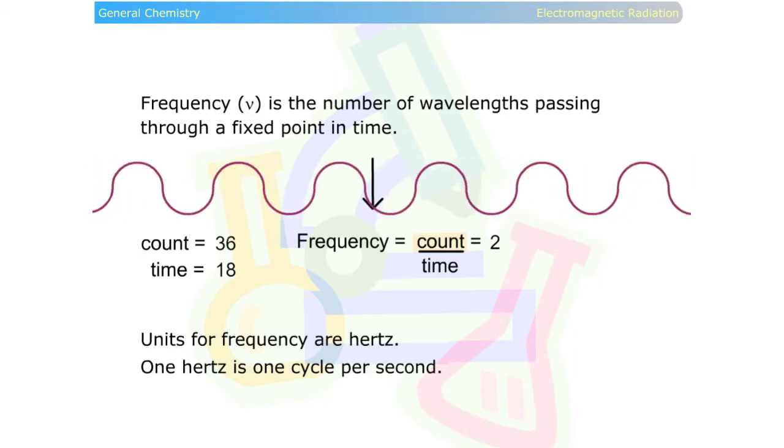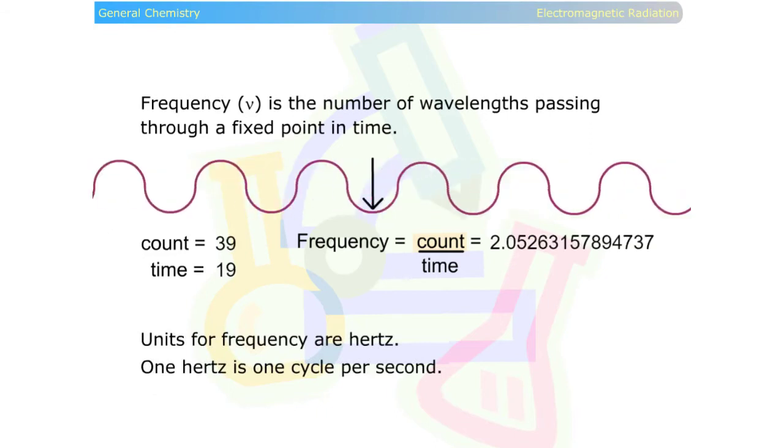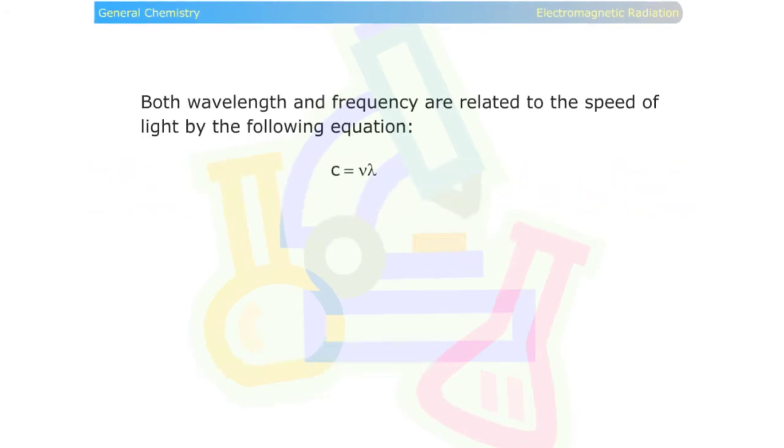In this example we calculate frequency by counting how many wavelengths pass through per second.